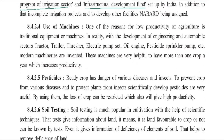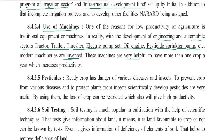The next technological method is the use of machines, which increases productivity. The engineering and automobile sectors have been developed for this. Tractors, trailers, threshers, electric pump sets, engine oil, pesticide sprinklers, and sprinkler pumps — all these machines have been developed. These machines are very helpful for having more than one crop in a year, so farmers can achieve multiple harvests annually.